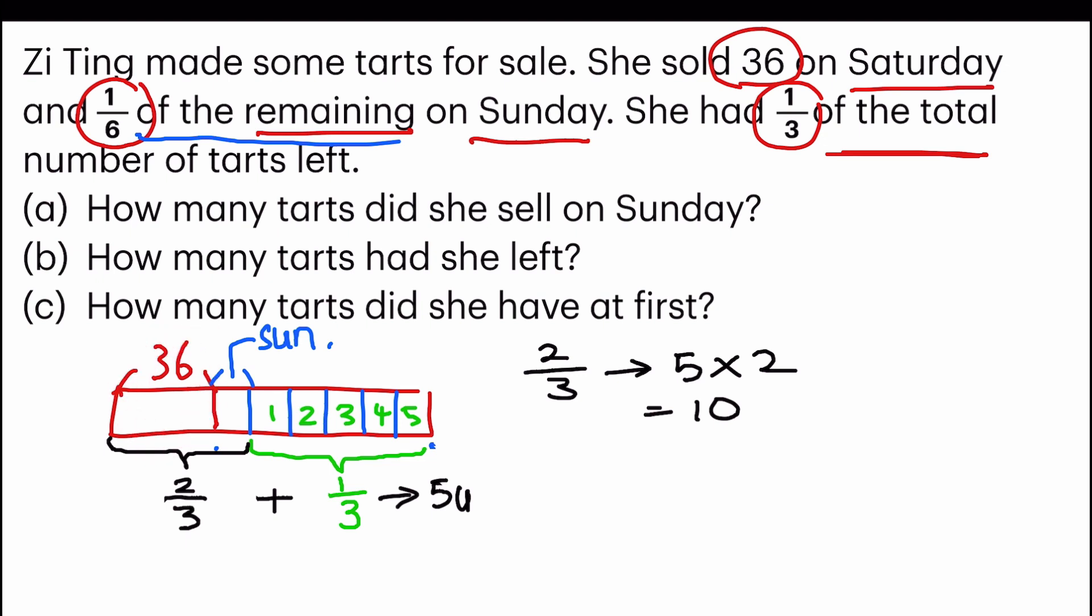So I need to take away this little portion, one unit here, for Sunday. So which means ten units minus one unit equals nine units. After taking that away, I can gladly say that this 36 is equal to nine units.